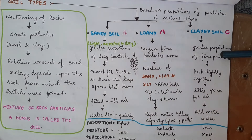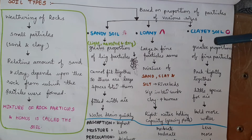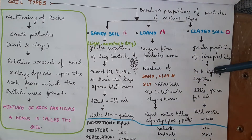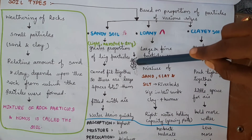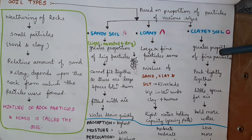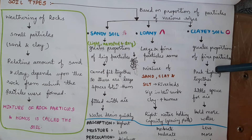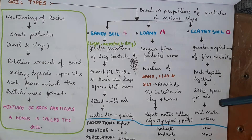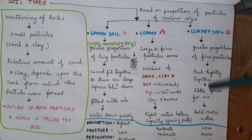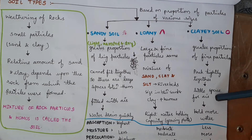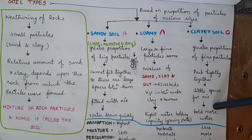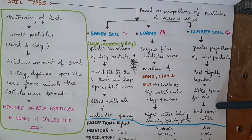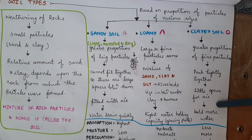In clay soil, fine and small particles are present in equal proportions. The small particles are tightly packed, so the spaces between them are very thin. In sandy soil, the large particles are loose with big spaces, but in clay soil the spaces are very thin and there is very little air. Because the particles are tightly packed, water cannot drain quickly — the clay soil holds water and remains wet.